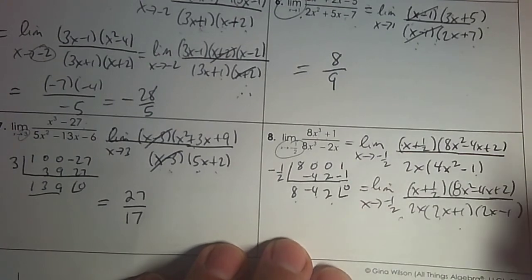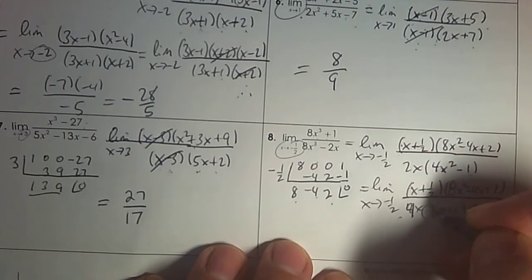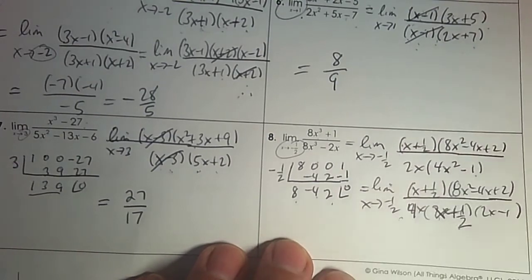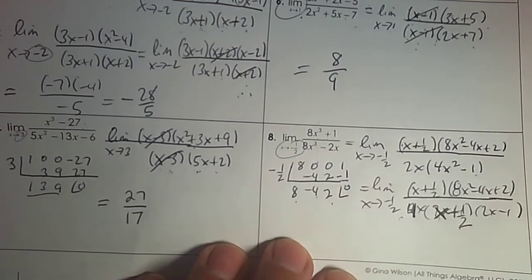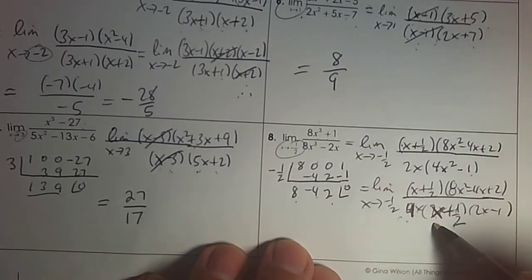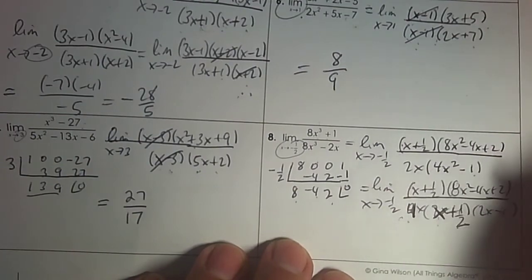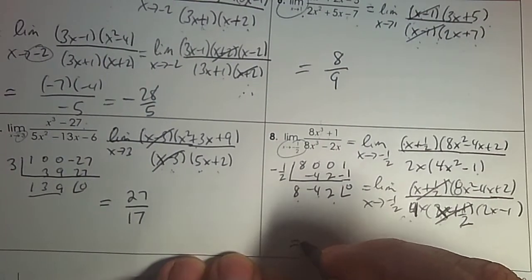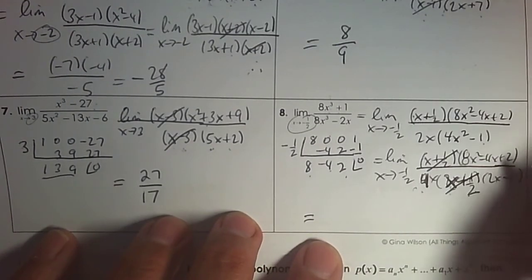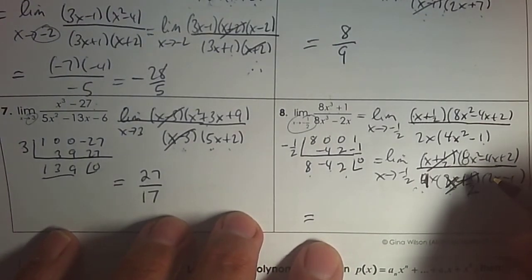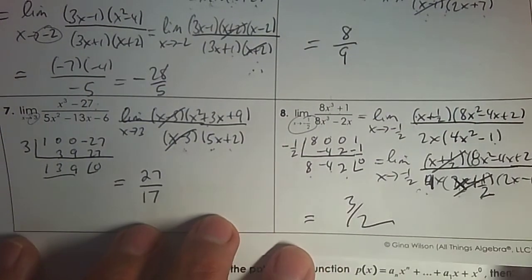I can divide out, factor out a 2, so that you can see it match — that would make this 4. This would then just be x plus 1 half when you factor out the 2. So if I go 4, and these cross out, substitute in. Now you can plug in negative 1 half. If you plug in negative 1 half and simplify, you get the answer 3 over 2.